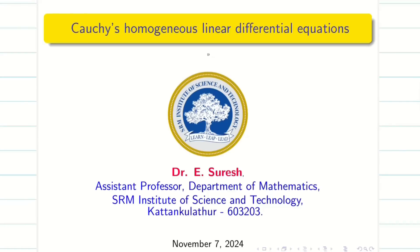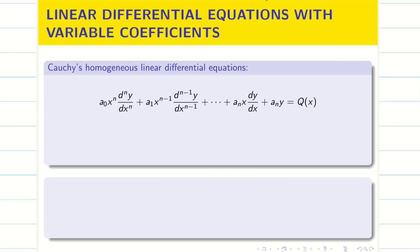Welcome to the session on Cauchy homogeneous linear differential equation. In this session we are going to see the definition and then a few simple problems on Cauchy linear differential equation — linear differential equation with variable coefficients. Until now, from all our previous videos, we have been dealing with differential equations with constant coefficients: second order differential equations, homogeneous linear differential equations, etc. Now we are going to deal with variable coefficients. The first kind is the Cauchy homogeneous linear differential equation.